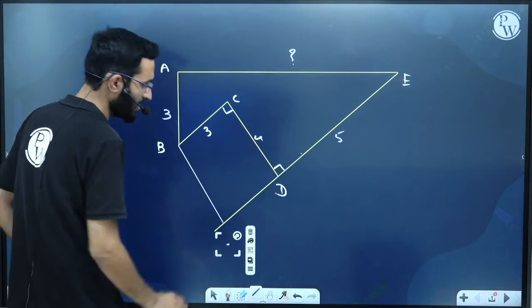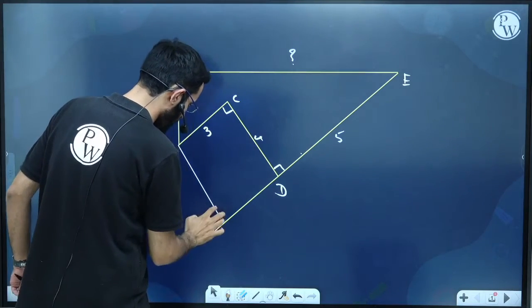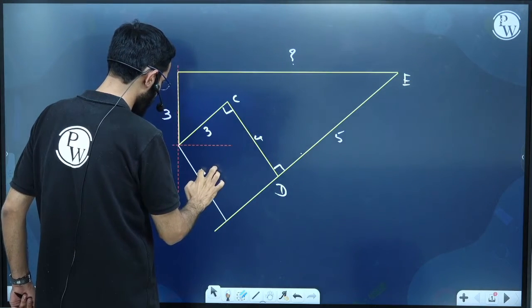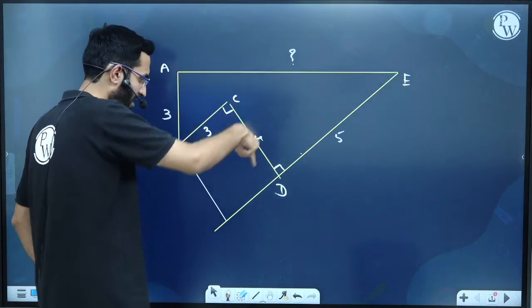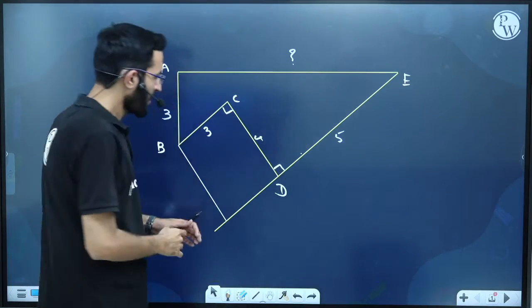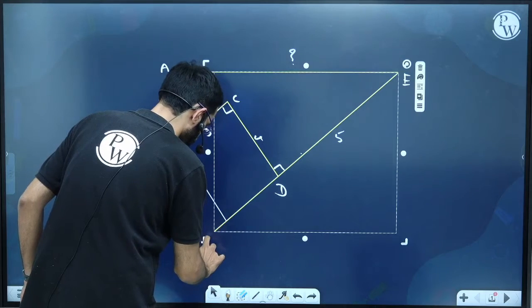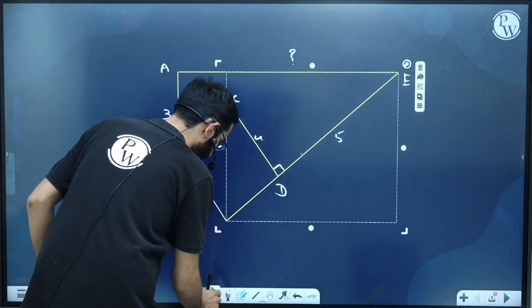I am drawing this line such that it can be perpendicular to both these given lines. It is same as CD. Please give me some response. So if I am drawing in such a way, let us give this point as some point, suppose F.